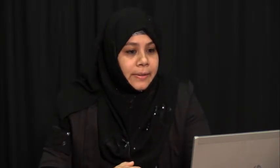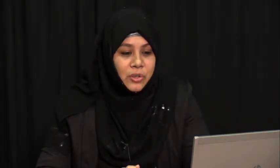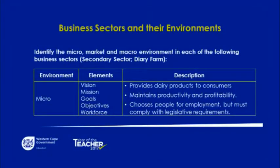Now we are going to look at the micro environment in the secondary sector — again, the dairy farm. The elements are the vision, the mission, the goals, the objectives, and the workforce. The description is that they would provide dairy products to consumers in the secondary sector, as they are manufacturing. They would maintain productivity as well as profitability. They could choose people for employment but must comply with legislative requirements, exactly as in the primary sector.